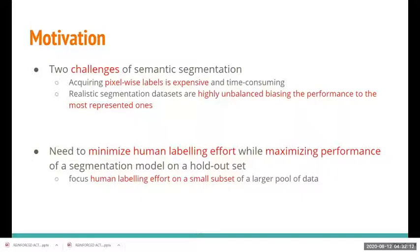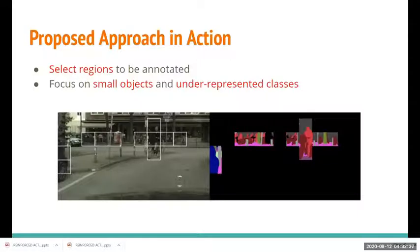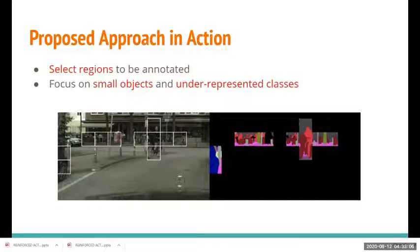So what do we need to do? We need to minimize human labeling effort and at the same time maximize performance of a segmentation model — in other words, focus human labeling effort on a small subset of the data. Looking at a simple example, instead of using the entire image, the proposed approach focuses on small objects and underrepresented classes such as bicycles, people, poles, and traffic lights, instead of road for example.